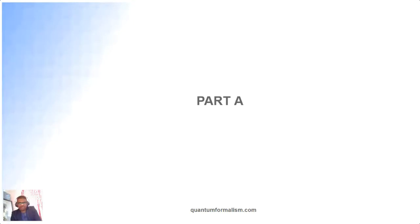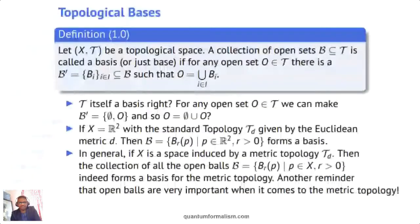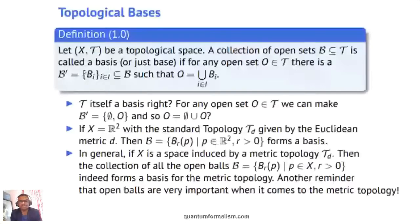The first thing we'll cover in Part A is the notion of basis. So given a topological space, a sub-collection of the topology is called a basis, or just a base, if for any open set in the topology there is a sub-collection indexed by an arbitrary set I — this could be finite, infinite, countable, or uncountable — such that the open sets can be decomposed as a union of this sub-collection. That's essentially what a basis in the abstract topological sense is.